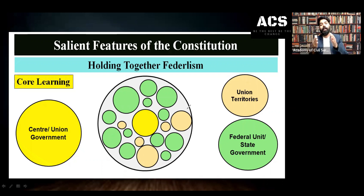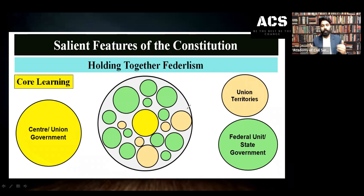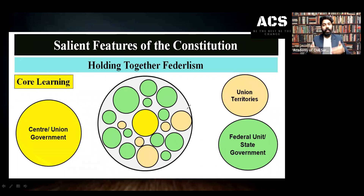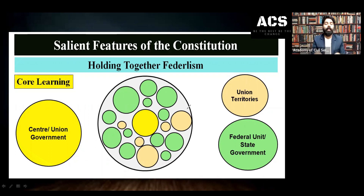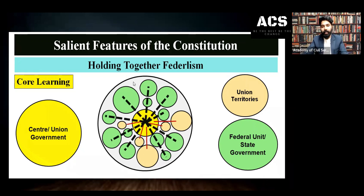This written constitution under the Seventh Schedule provides division of power between the center and state through the Union List, State List, and Concurrent List. Under Article 1 of the Indian Constitution, India is described as a union of states. But we are different from the US — our states did not form a federation by agreement or treaty. Indian federalism is formed by disintegration, with the central government enjoying strong control over the states. This is holding together federalism.